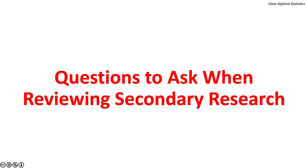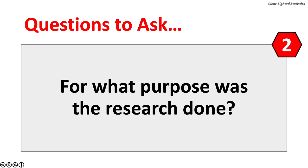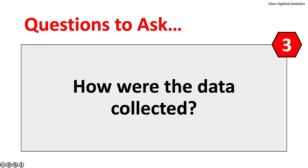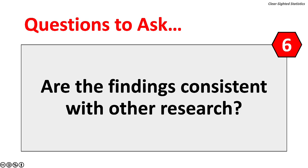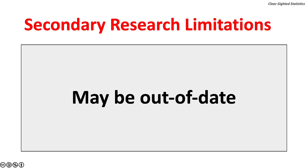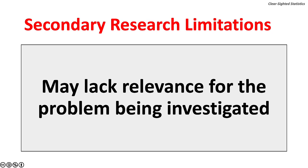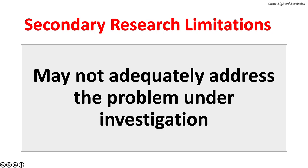Here are some questions to ask when reviewing secondary research: Who conducted the research? For what purpose was the research done? How were the data collected? When were the data collected? What is included in the data and what is not? Are the findings consistent with other research? Secondary research has limitations: appropriate secondary research may not be available, it may be out of date, it may lack relevance for the problem being investigated, it may be inaccurate, and while useful, it may not adequately address the problem under investigation.